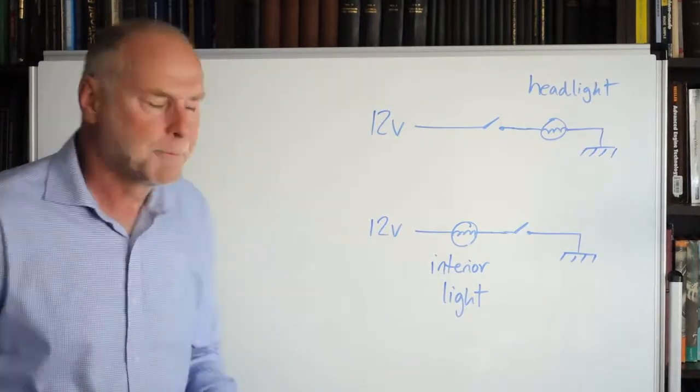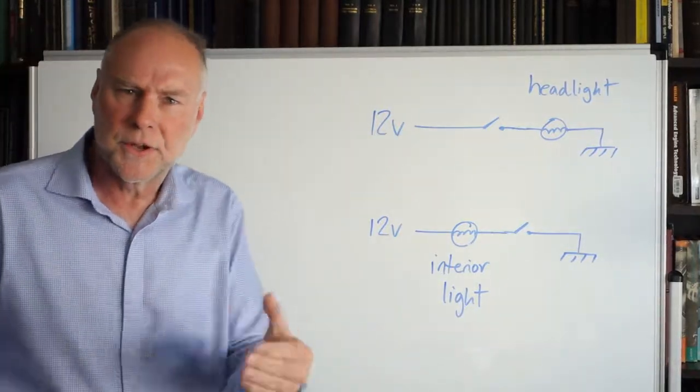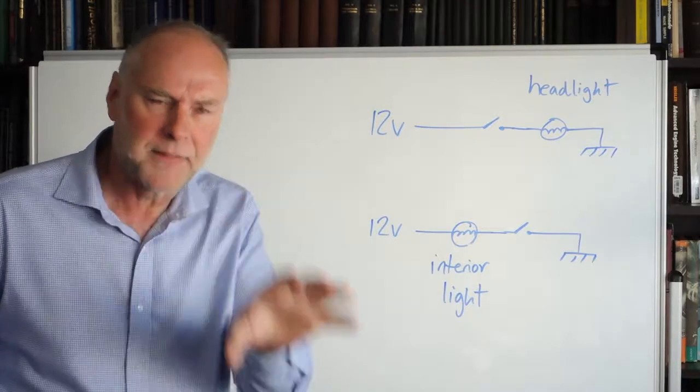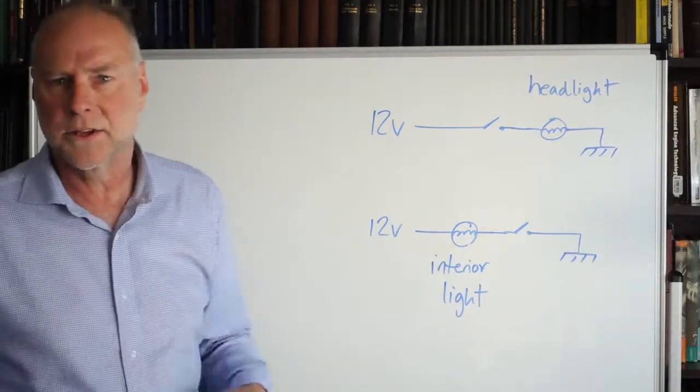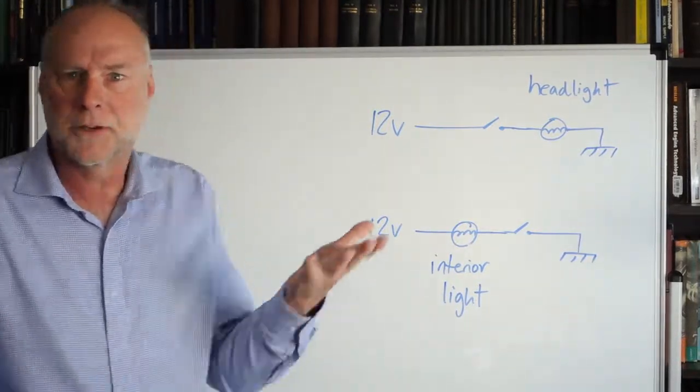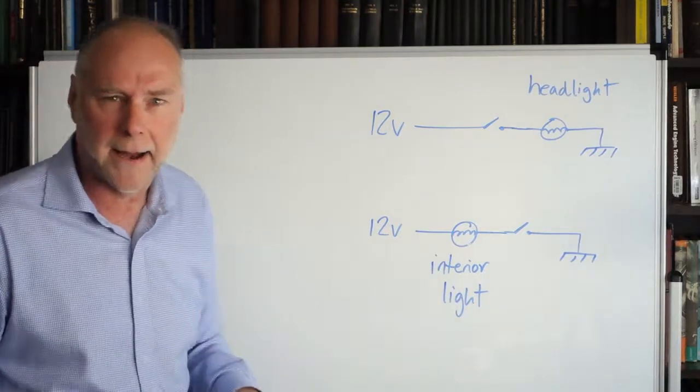So how do you wire it in? Well let's have a look at the two circuits, the first is the headlight circuit and the other one is the interior light circuit and these are already in your car, I'm just showing you what they look like in a diagram form.